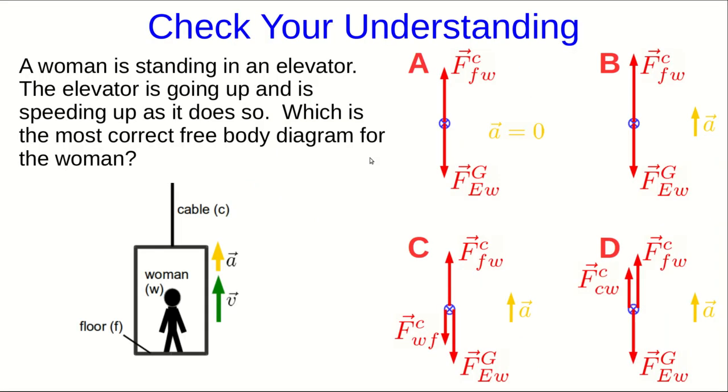Let's check your understanding of this process so far. So suppose a woman is standing in an elevator, and the elevator is going up, and it's speeding up as it does so. So I have reminded you that if the elevator is going up and speeding up, the acceleration vector of the elevator must point upward. So which of these is the most correct free body diagram for the woman, not for the elevator, for the woman?